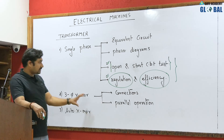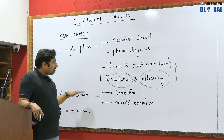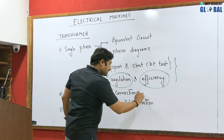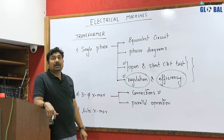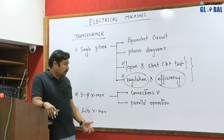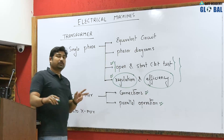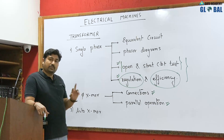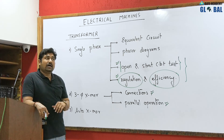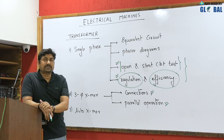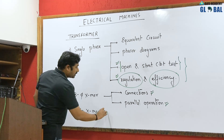Next is the three-phase transformer, which also covers regulation, efficiency, and electrical equivalent circuit models. You have to go through each and every connection — star-delta, star-star, star-star-6, delta-star-1, and so on. Then parallel operation for both single phase and three phase, since three-phase transformers are calculated on a single-phase basis as all three phases are identical. Auto transformer is also very important from the gate point of view.